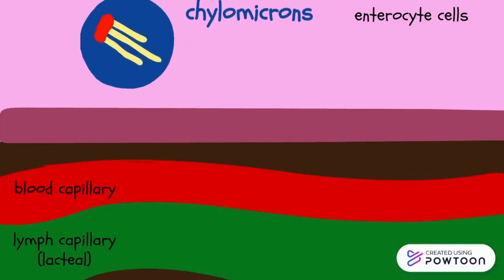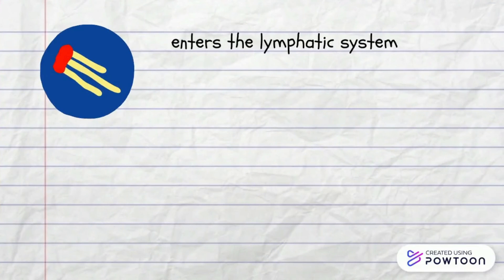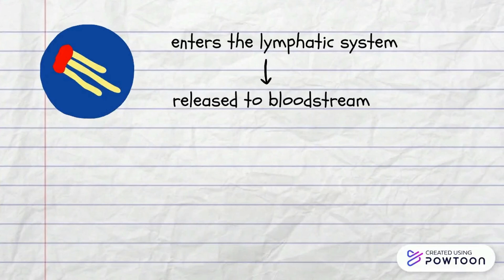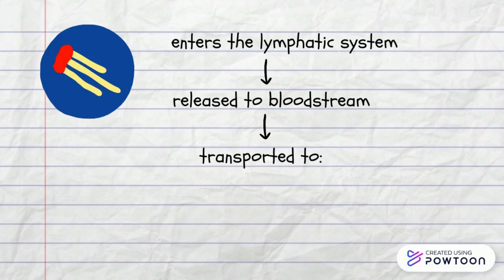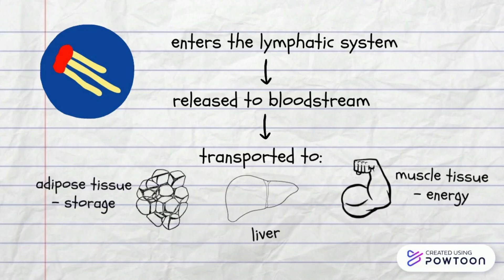On the other side of the enterocyte cells, the chylomicrons are too large to enter blood capillary walls, so instead they enter the lymph capillary, known as the lacteal. Then the chylomicrons are transported through lymphatic vessels and eventually enter the bloodstream, where they will be transported to the liver, adipose tissue for storage, and muscle tissue for energy.